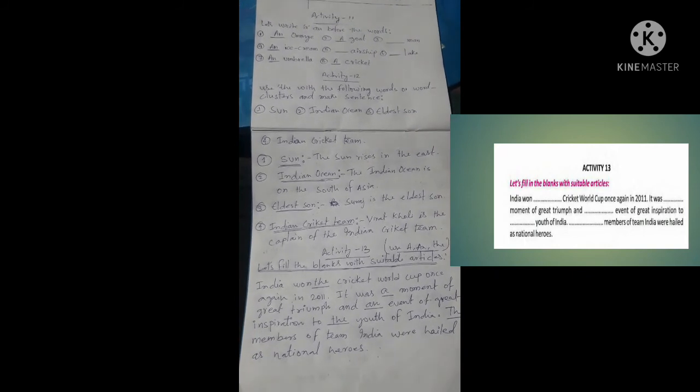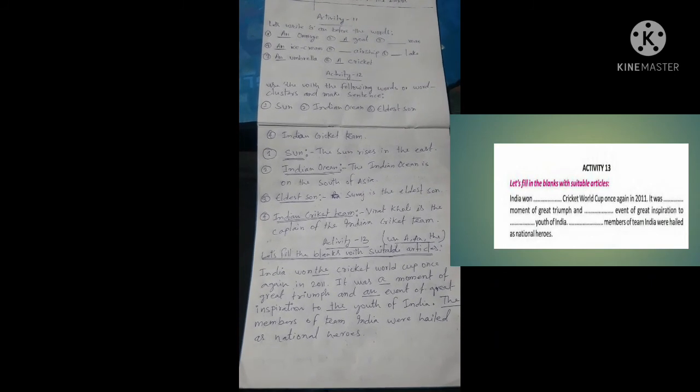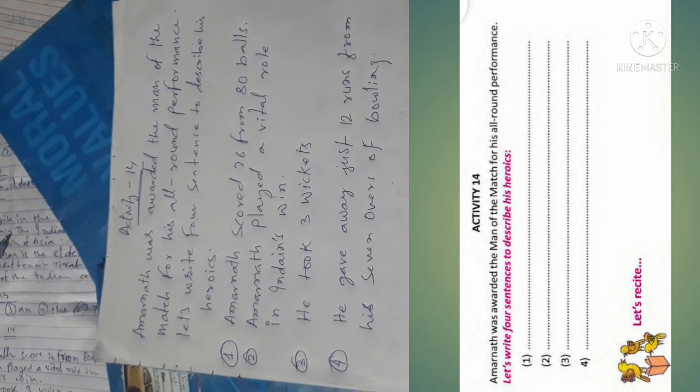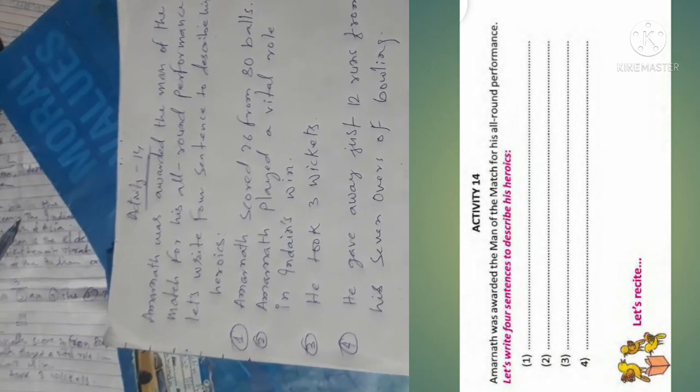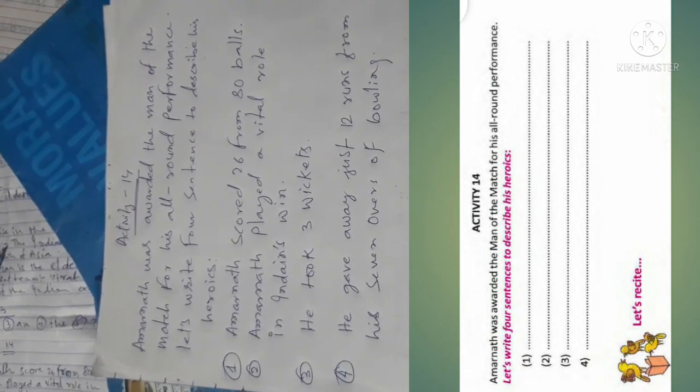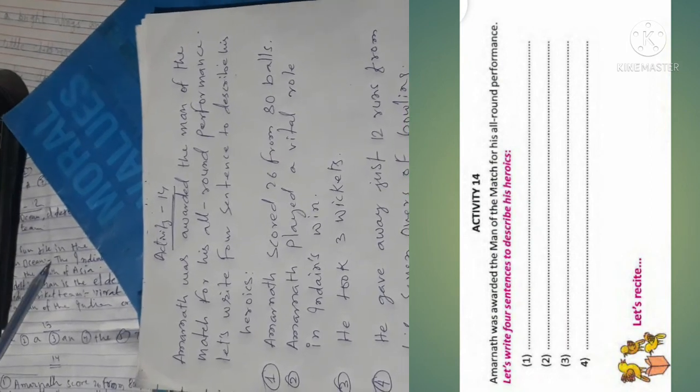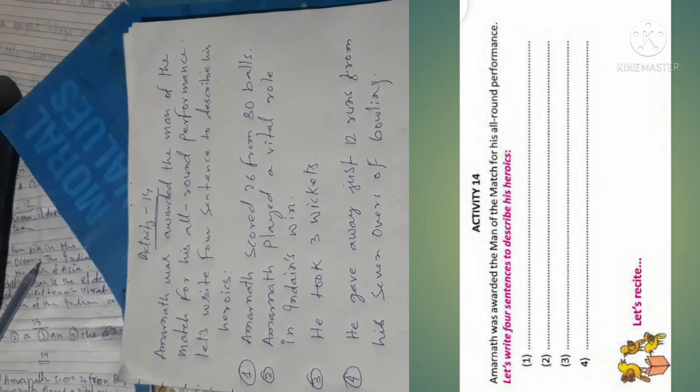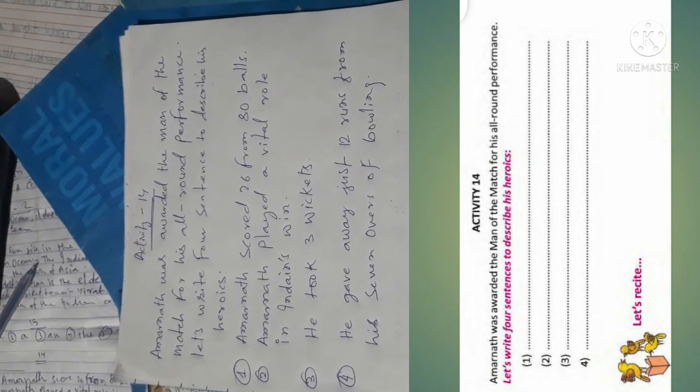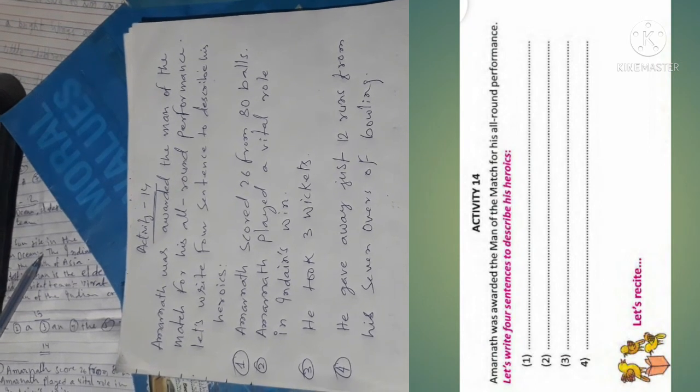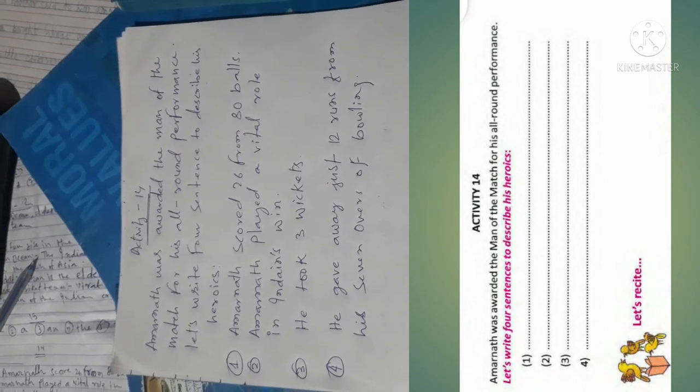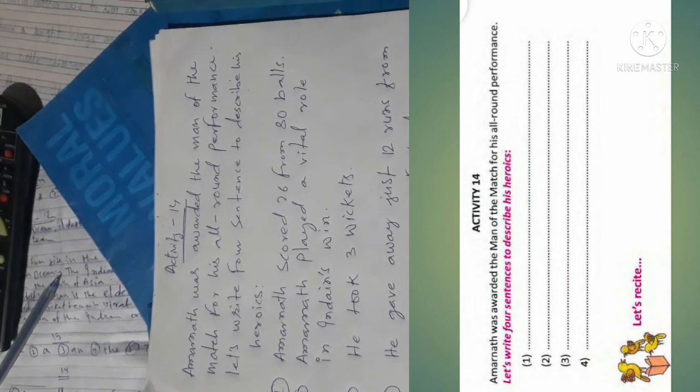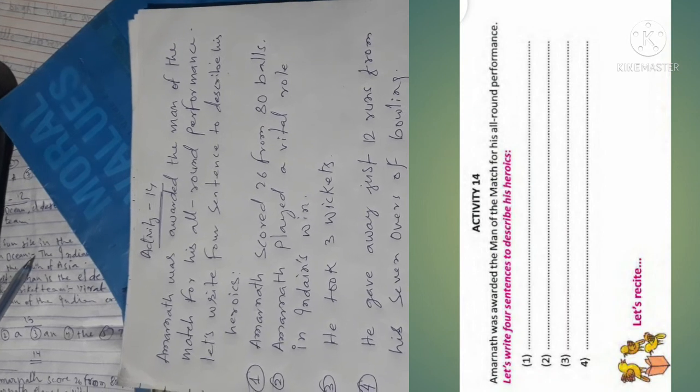Activity 14: Amarnath was awarded the Man of the Match for his all-around performance. Let's write four sentences describing his role. Number 1: Amarnath scored 26 runs from 80 balls. Number 2: Amarnath played a vital role in India's win. Number 3: He took three wickets. Number 4: He gave away just 12 runs from his seven overs. Thank you.